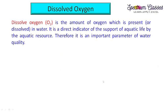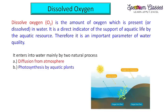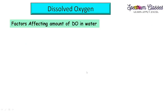Now the question comes: from where does this dissolved oxygen come into the aquatic body? Dissolved oxygen enters into the aquatic body mainly by two natural processes. One is diffusion from the atmosphere and the second one is photosynthesis by the aquatic plants.